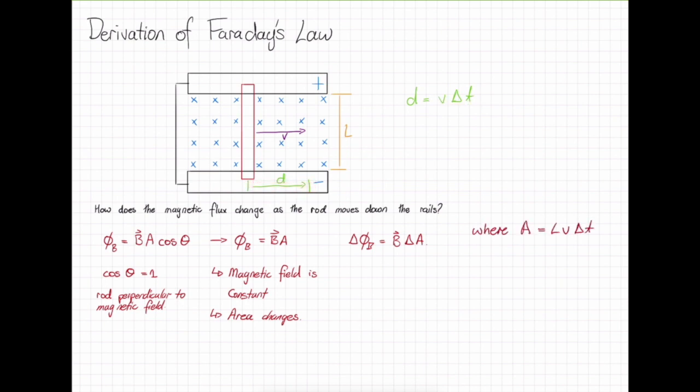That gives our area A equal to the length multiplied by the distance, which is its velocity times time. Substituting this into the equation and rearranging so that all our changes are on one side, gives us that the change in magnetic flux over time is equal to the magnetic field multiplied by the length and the velocity that the change is occurring at.